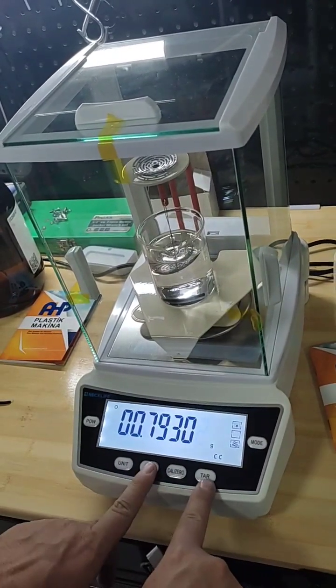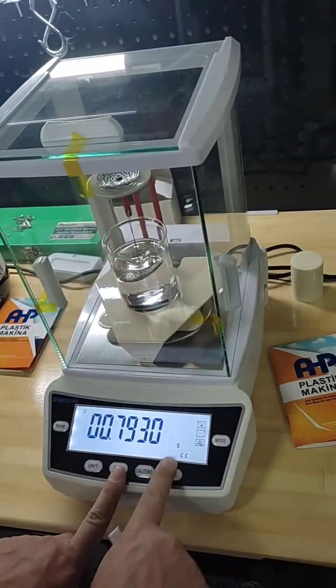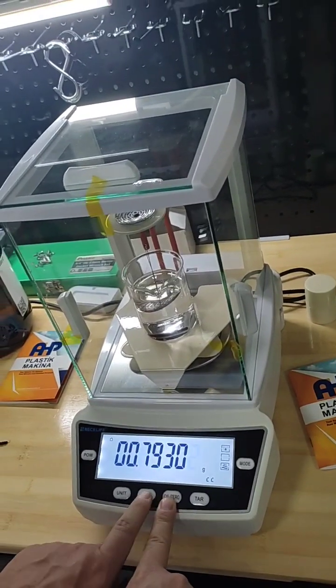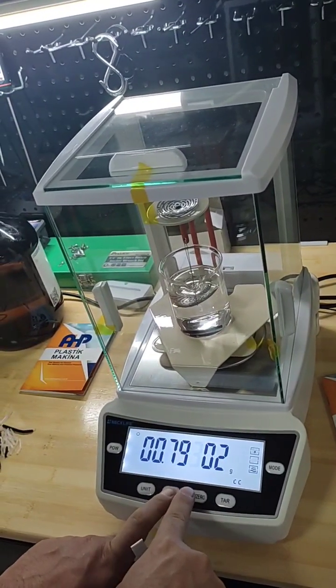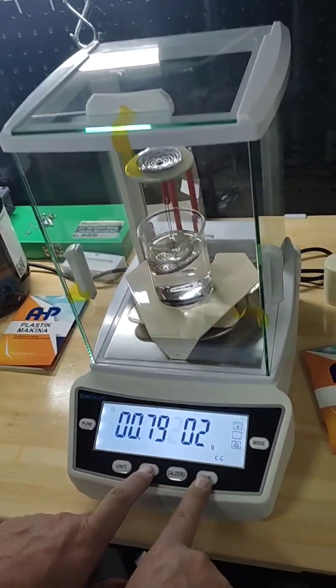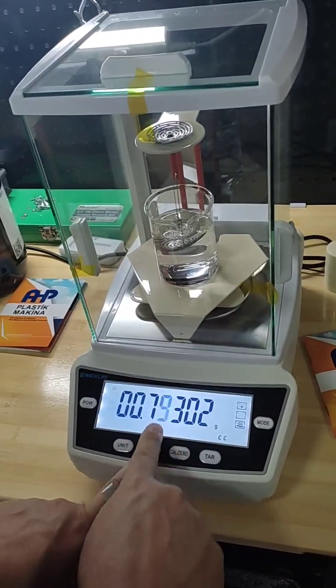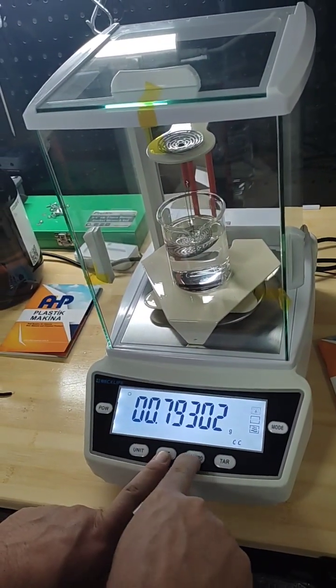You can change this number using these three keys. Tar is reducing the value and color is increasing it and print is selecting which number you're going to change. You see tar reducing, color increasing.